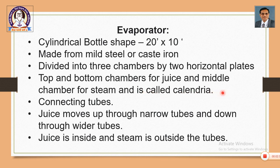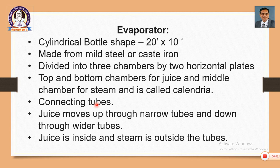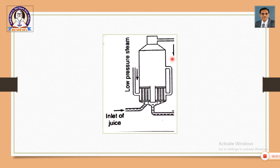The technical feature is that the bottle-shaped container is horizontally divided into three chambers by two plates. These plates are connected by tubes. Top and bottom chambers are for juice and the middle chamber is for steam. There are connecting tubes of two types: wider tubes and narrow tubes. Juice moves up through narrow tubes and comes down through wider tubes. Juice is inside and steam is outside the tube. Let us see the schematic figure to make this clear.